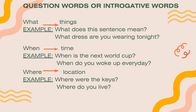Number two: 'when' — when you ask about time. For example: 'When is the next wake up?' or 'When do you wake up every day?' Number three: 'where' — when you ask about location. For example: 'Where were the keys?' or 'Where do you live?'